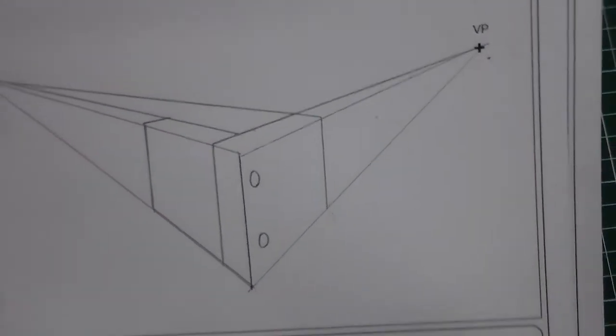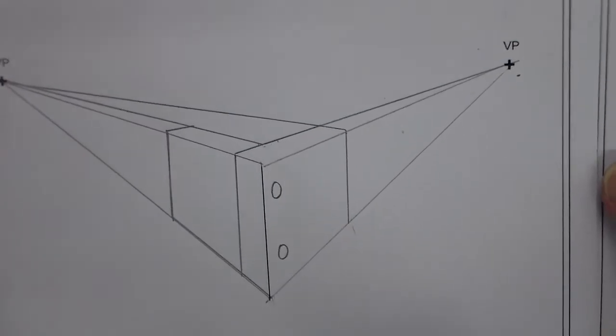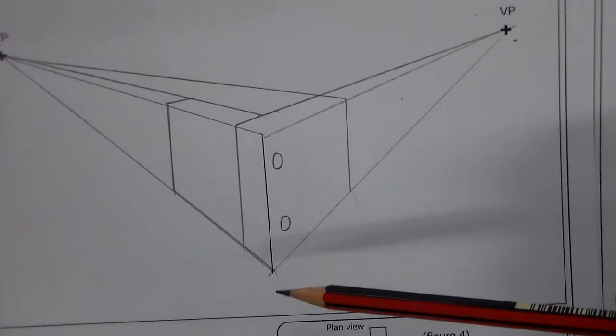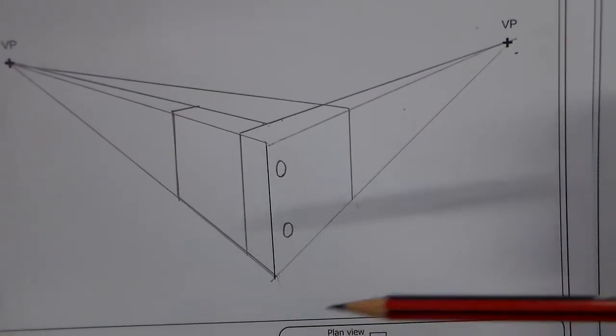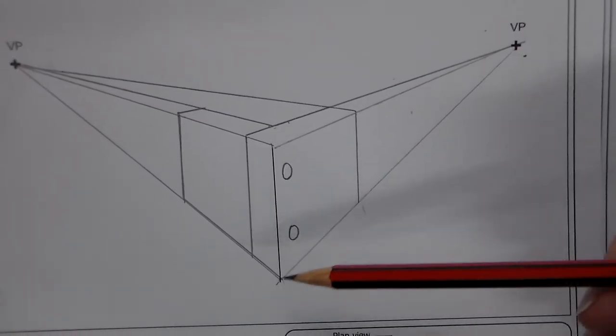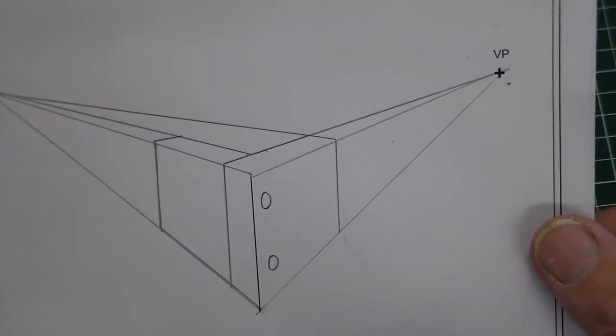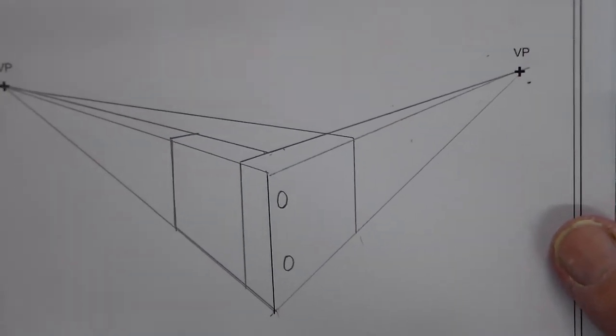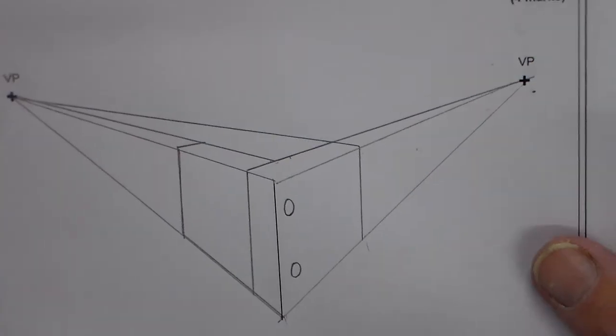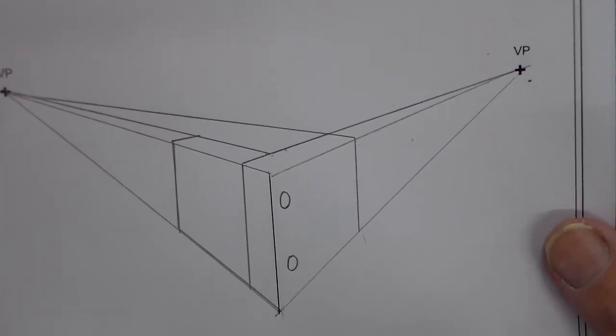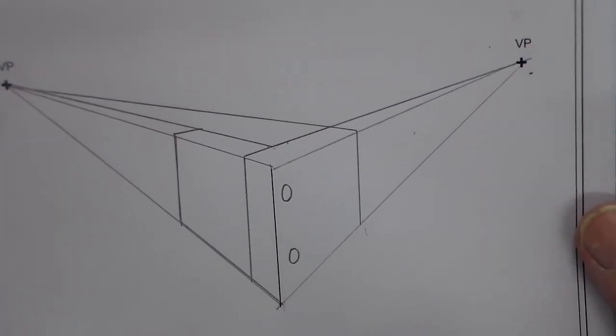And as I say, it's four marks, so it should take you four minutes, which it's taken me just about that, and then that's it. So there's the completed two-point perspective drawing of the dowel joint for GCSE design and technology. Thank you for watching Mr. Ridley's Design and Technology.